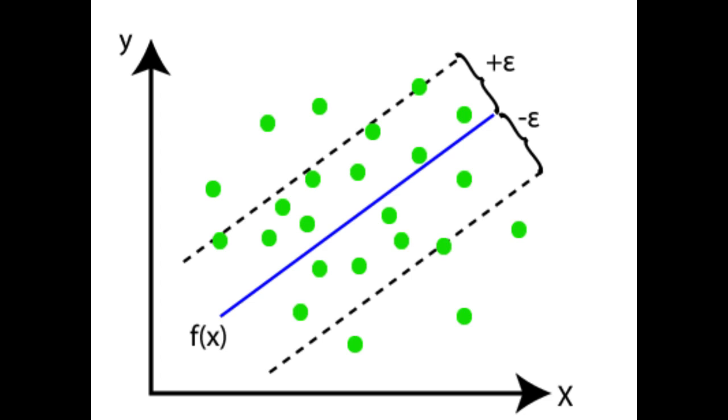The main goal of SVR is to consider the maximum data points within the boundary lines and the hyperplane best fit line must contain a maximum number of data points.